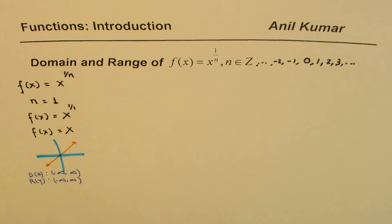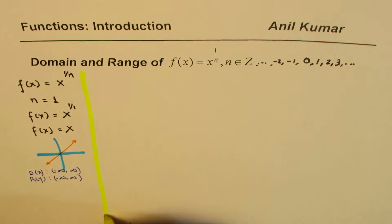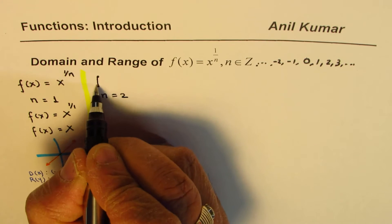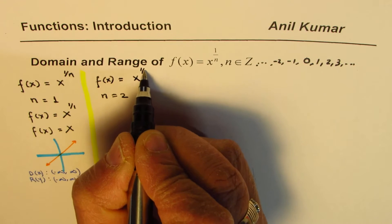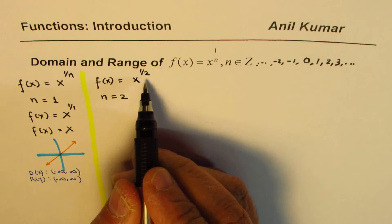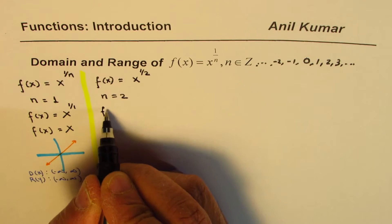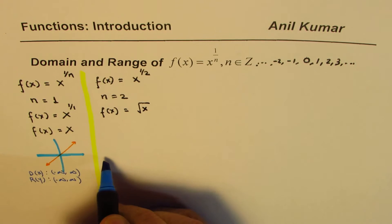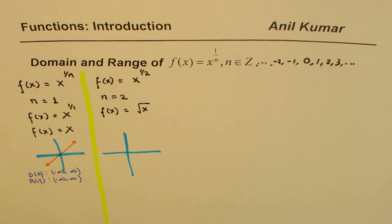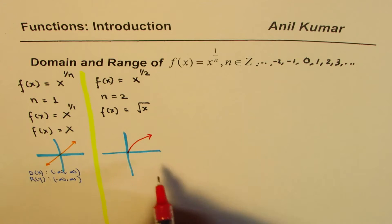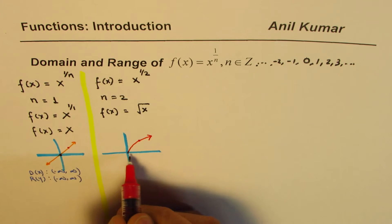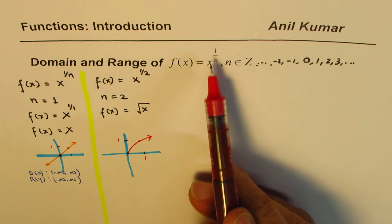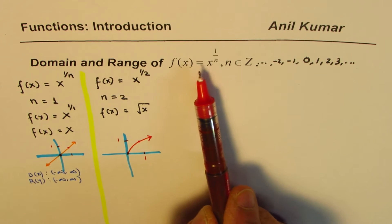Now let's move on and take some examples where n is greater than 1. If I take n = 2, I get the function f(x) = x^(1/2). Now 1/2 is the square root function, so we could write this as f(x) = √x. This function is one of those parent functions. The critical points go through the origin, and the point (1, 1) will be on this function — for x = 1, f(x) will always be 1.